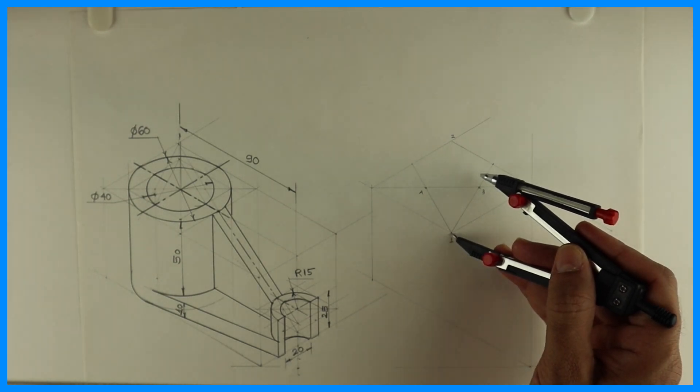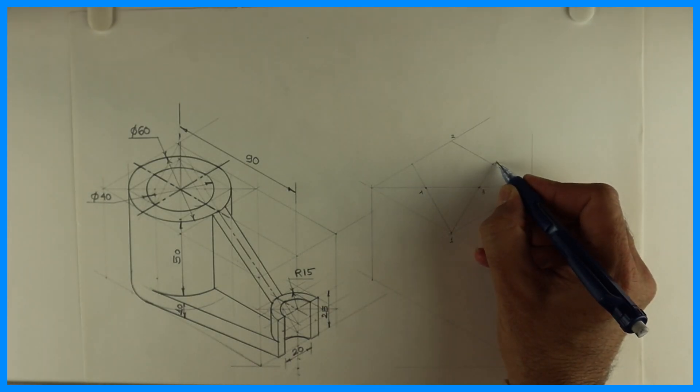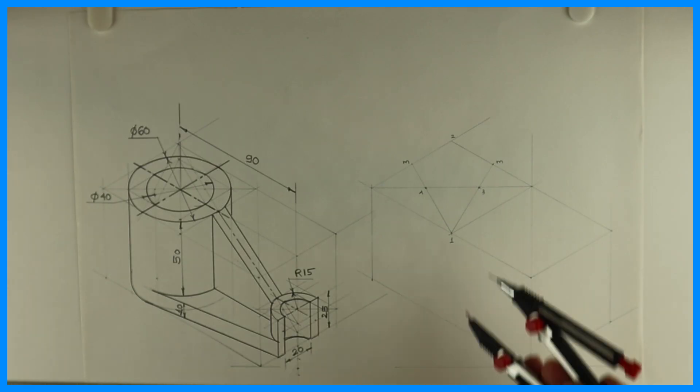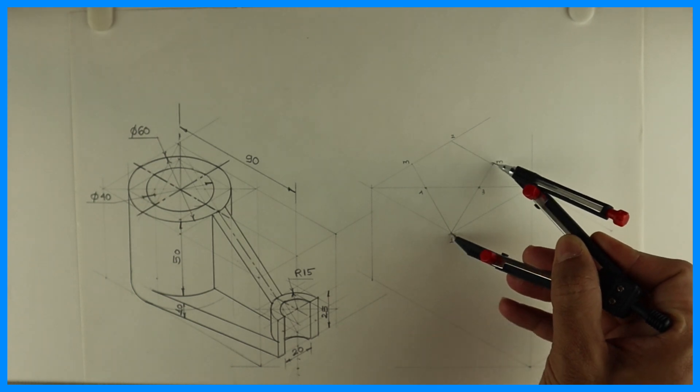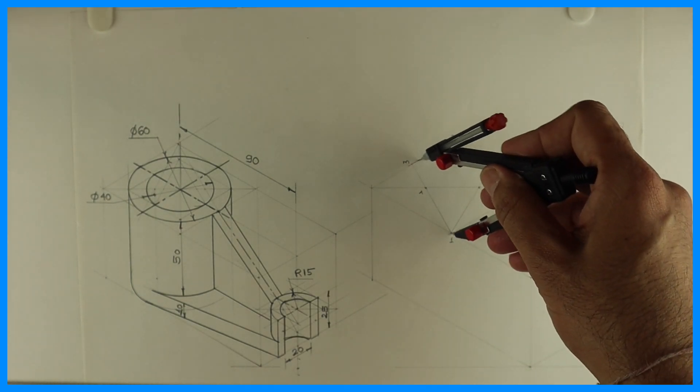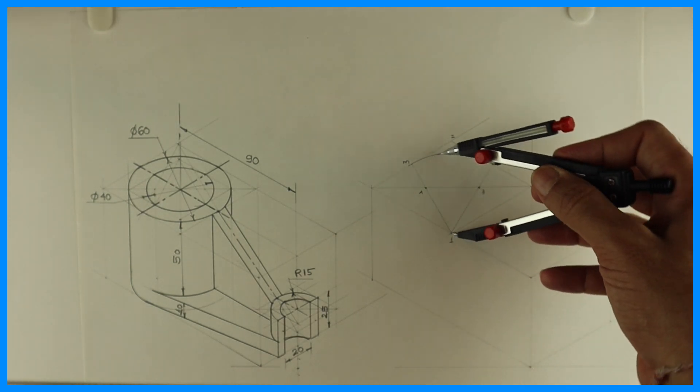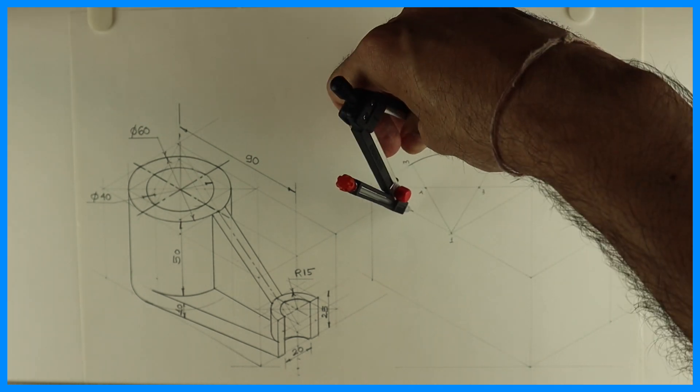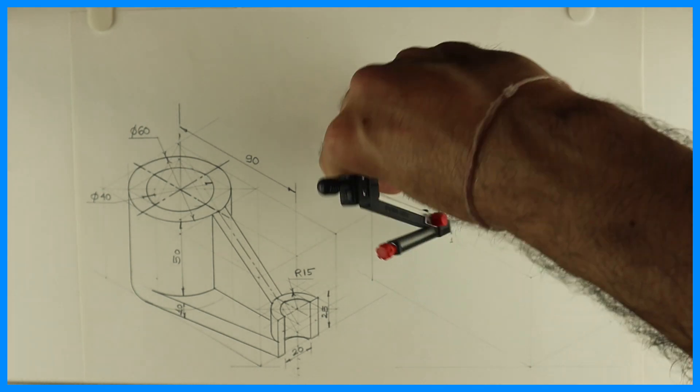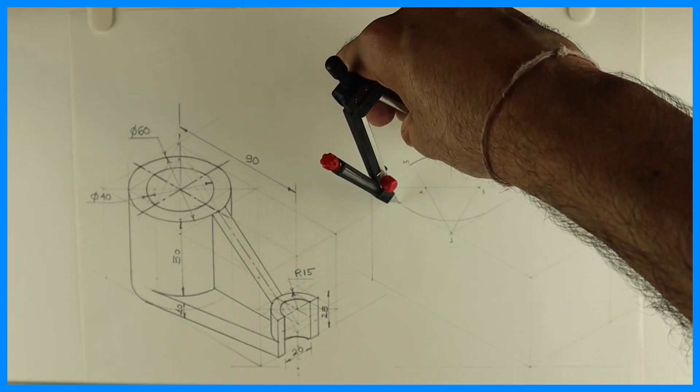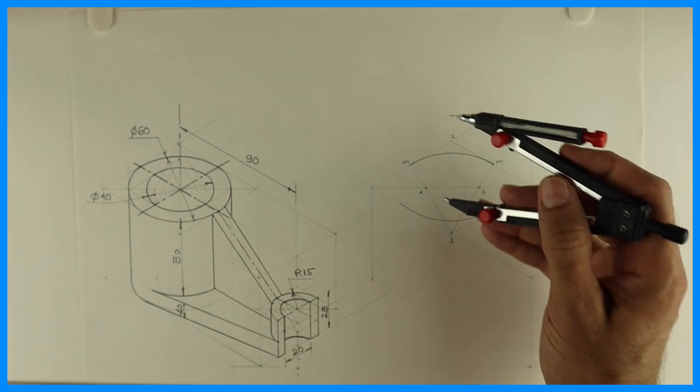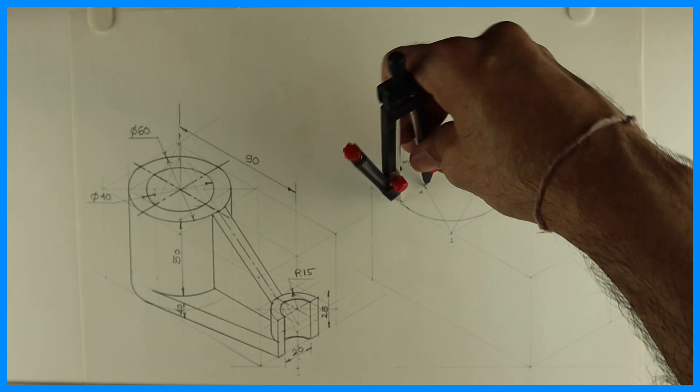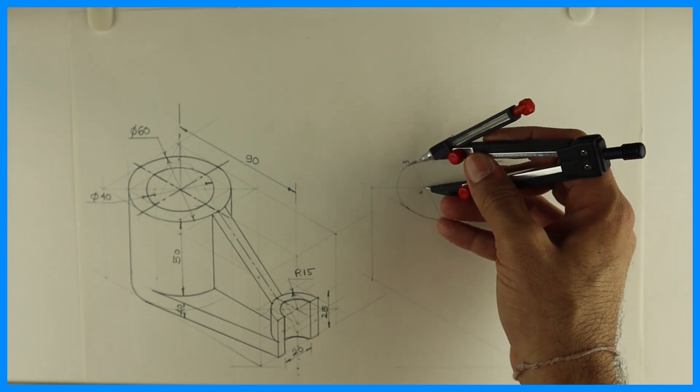Now you take one to M, and draw an arc. Same way from two, we can draw, keeping the same radius. Then four to M, you draw radius. Same with three to M.